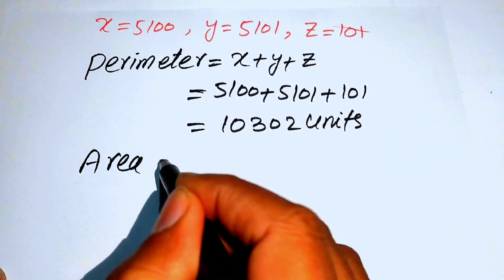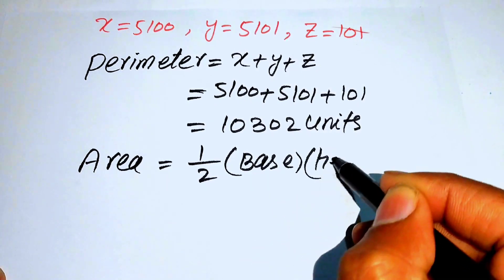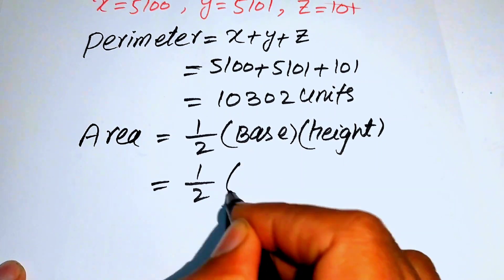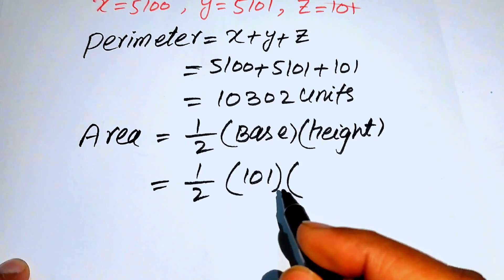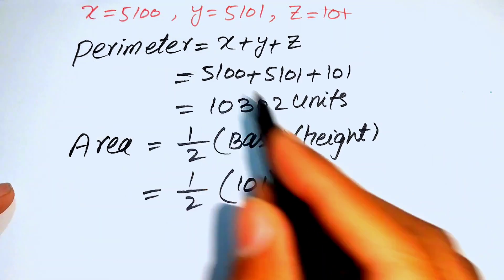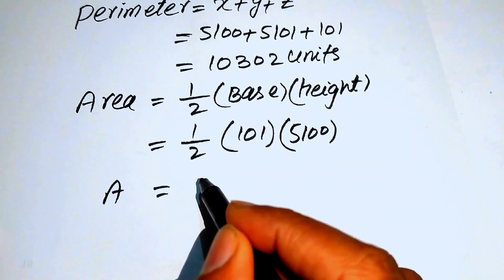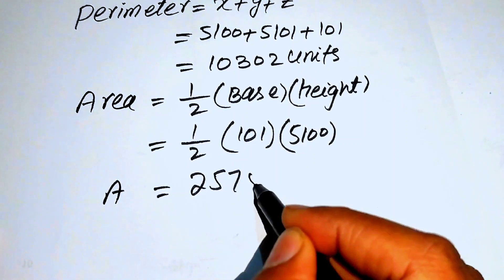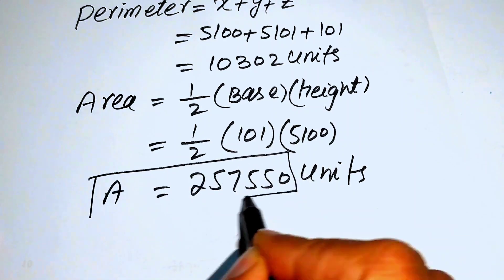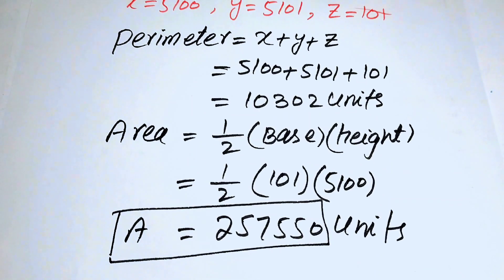Finally, the area of the triangle is ½ × base × height = ½ × 101 × 5100 = 257,550 square units. This is the area of the given right triangle. Thank you for watching — please subscribe to my channel for more exciting videos.